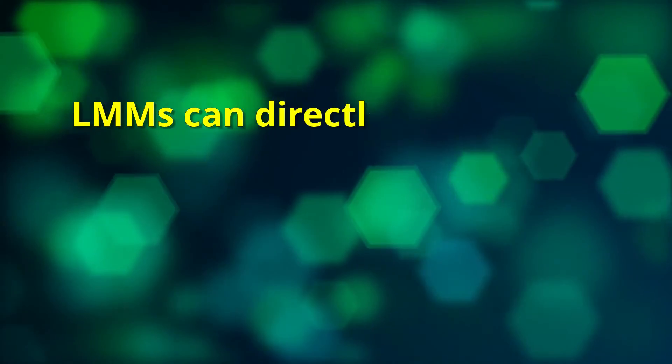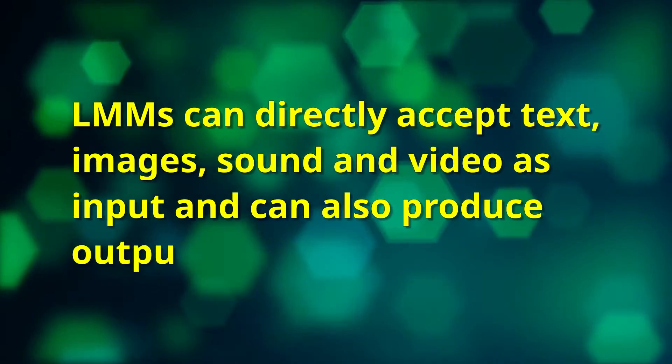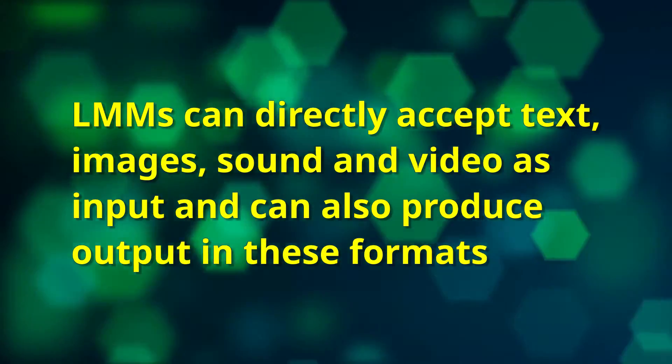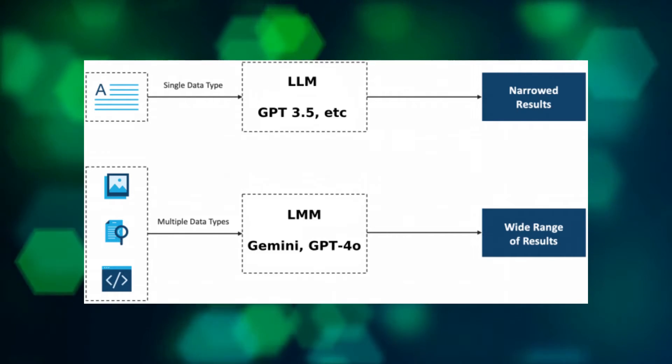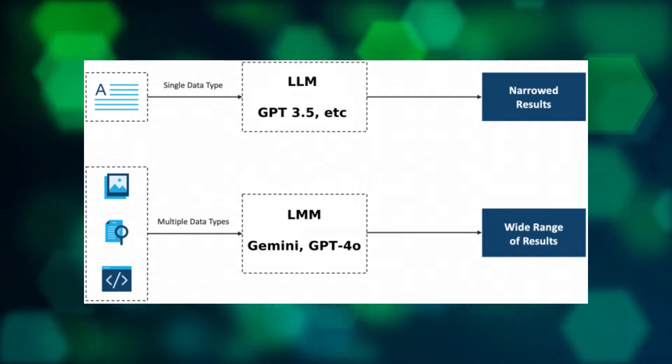LLMs are limited to processing textual data and can't really understand images and things like that. LMMs — large multimodal models — on the other hand, are designed to process and integrate multiple data sources: text, images, audio, video, and potentially other data types like sensors, giving them a broader input and broader output.